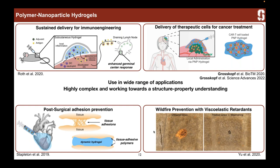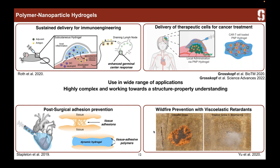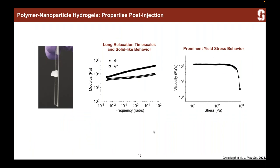Early on in my PhD, I really started to figure out how to make these gels reproducibly and how to characterize them. We started with basic rheology, which is much more relevant to post-injection. Once you've injected, we want a solid-like material. I can run a frequency sweep and see that across this frequency range, the G prime — the storage modulus — is greater than the loss modulus. We have a fairly flat response to frequency, so these are very solid-like across many frequencies.